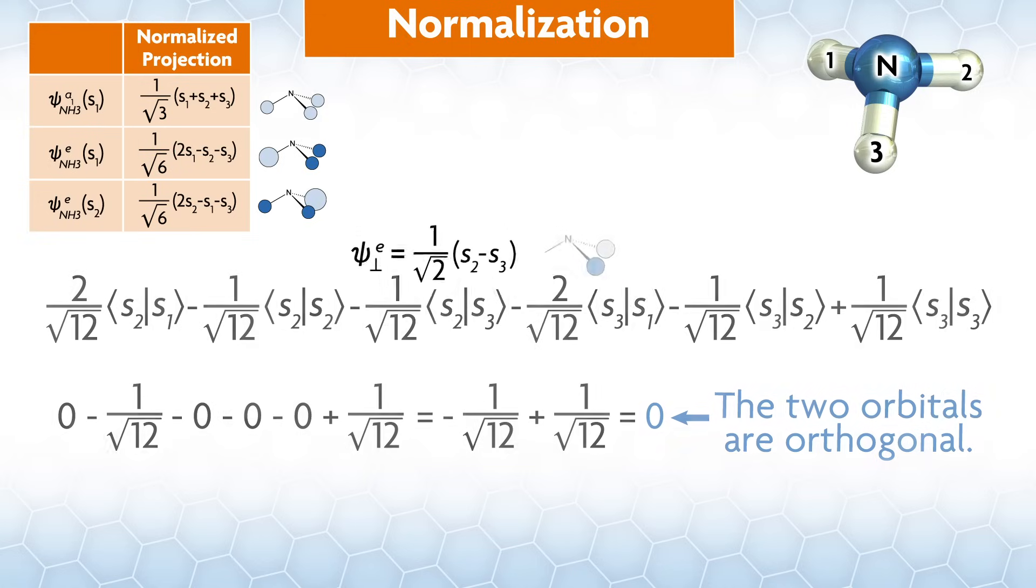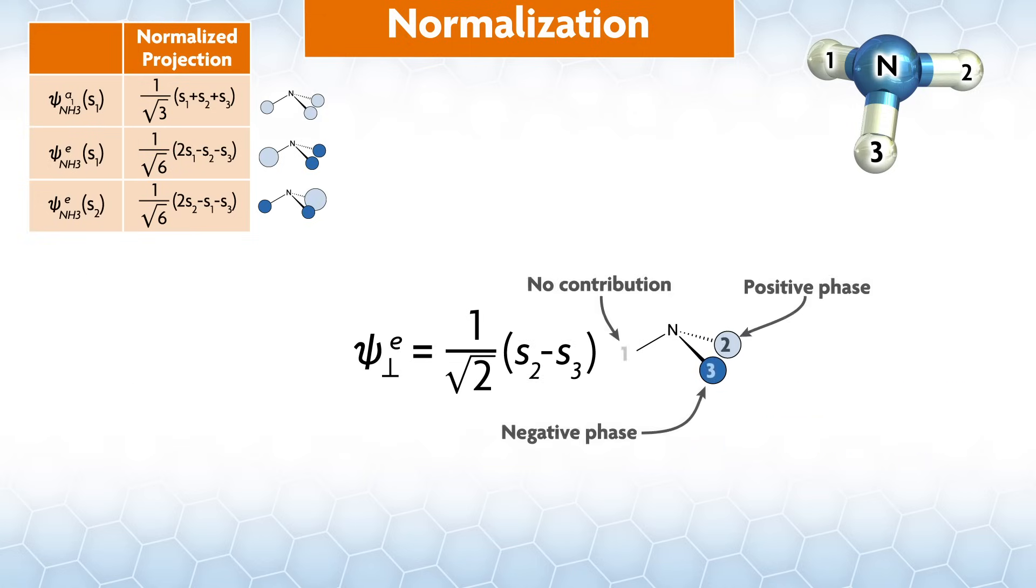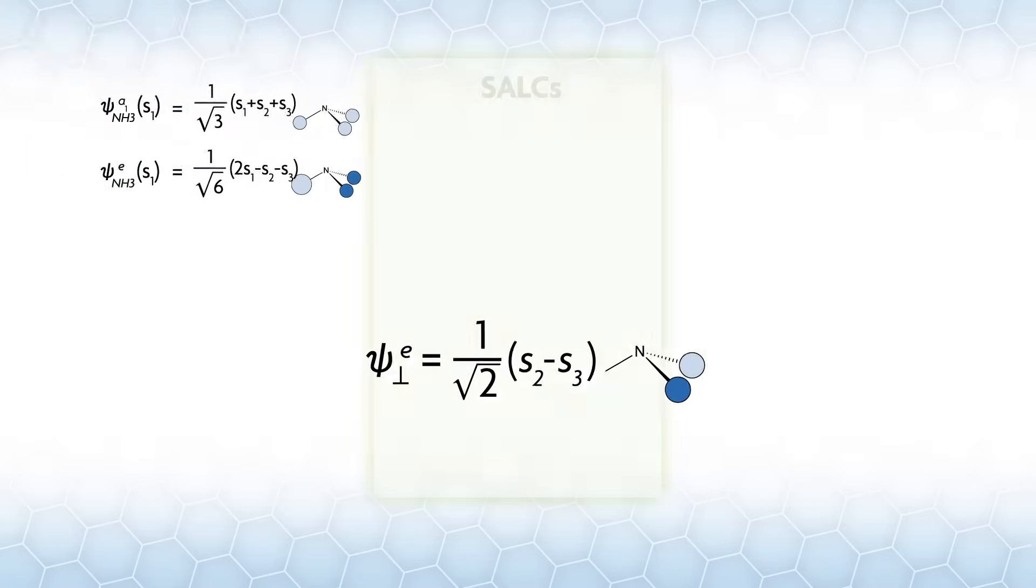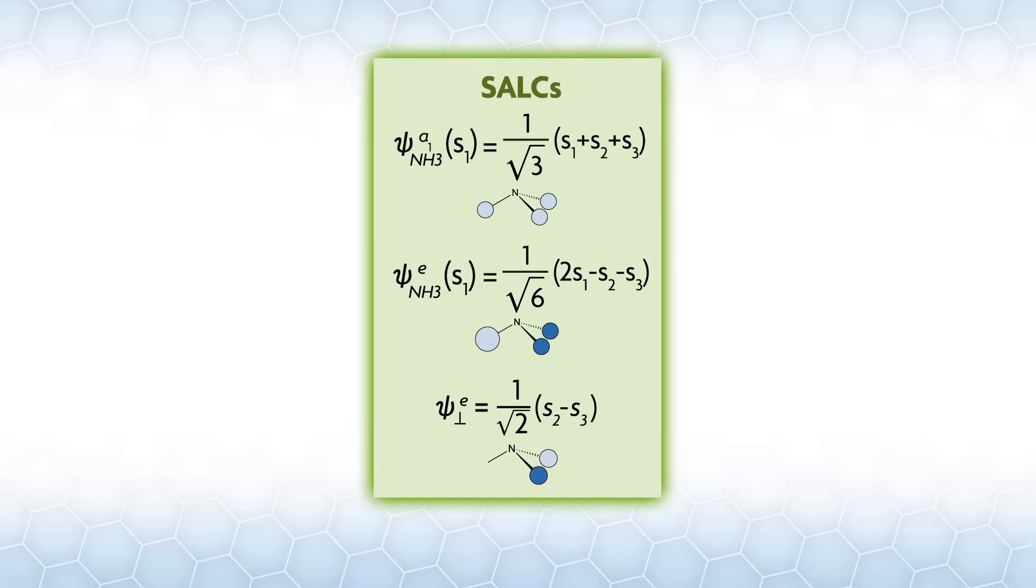Our new orthogonal orbital looks like this. There's a positive phase on hydrogen 2 and a negative phase on hydrogen 3. There's no contribution from hydrogen 1. The three hydrogen s orbitals from our bases combine under the symmetry of the molecule to give three SALCs with mathematical form that look like this. The orbitals themselves can be shown like this with positive phase shown by unshaded orbitals and negative phase shown by shaded orbitals.